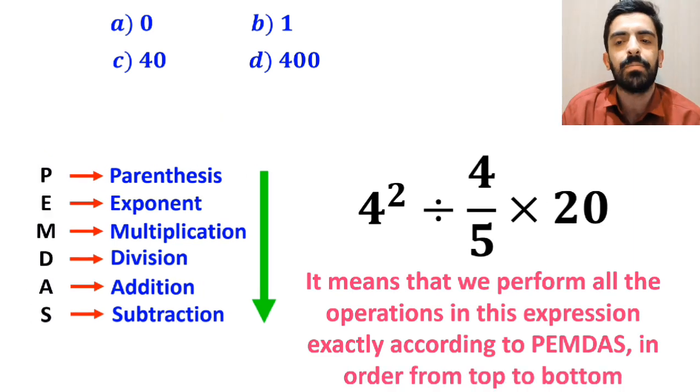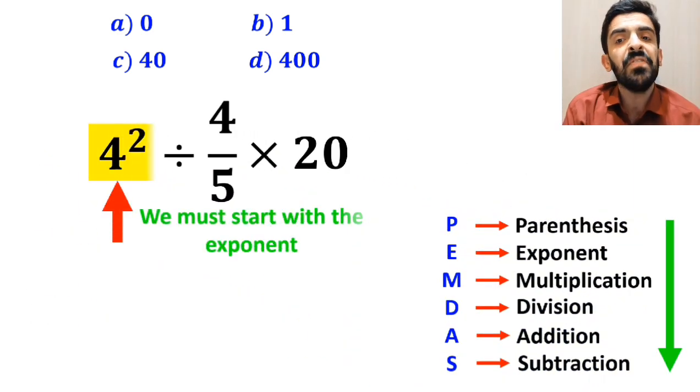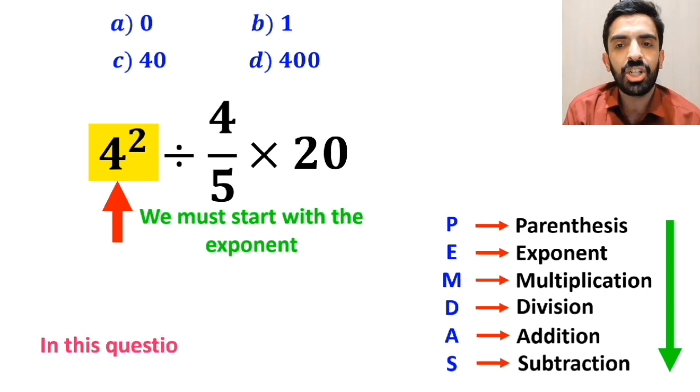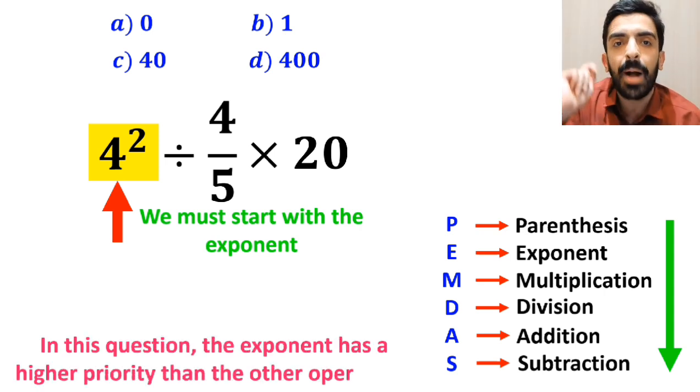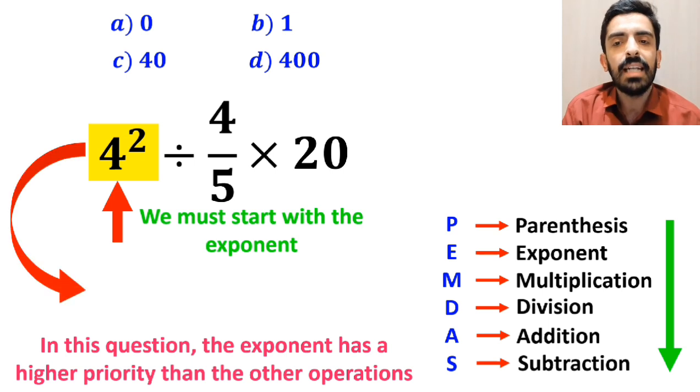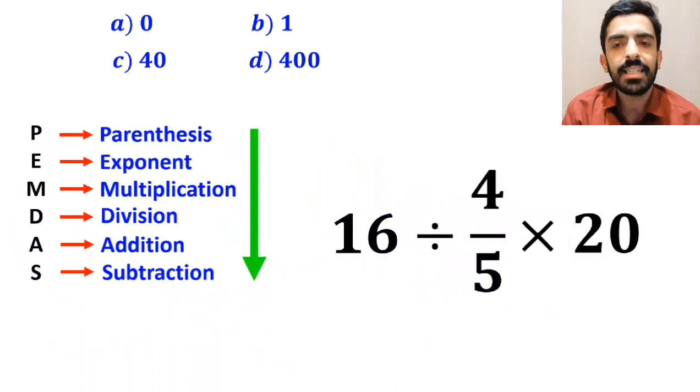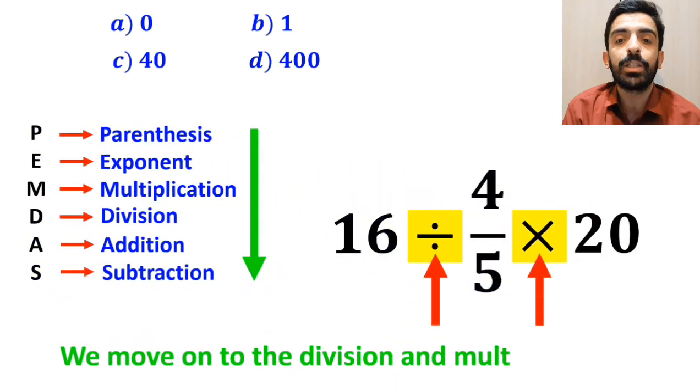First we must start with the exponent, because in this question exponent has a higher priority than the other operations. So instead of this expression we can write 16 divided by 4 over 5 multiplied by 20. In the next step we need to move on to the division and multiplication.